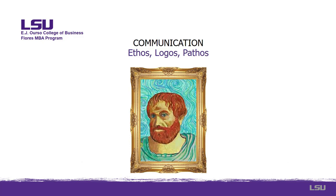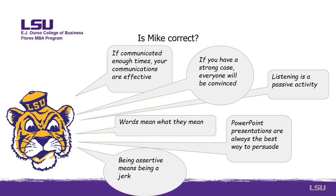Next we are going to discuss Aristotelian persuasion — ethos, pathos, and logos. A couple of questions: if communicated enough times, are your communications effective? Is that a myth — true or false? The next question: if you have a strong enough case, will everyone be convinced? Why is it that even with a strong case, you're not going to convince everybody? Are people more logical or more emotional? How do they make decisions — based off the greater good or some personal incentive? Consider that.